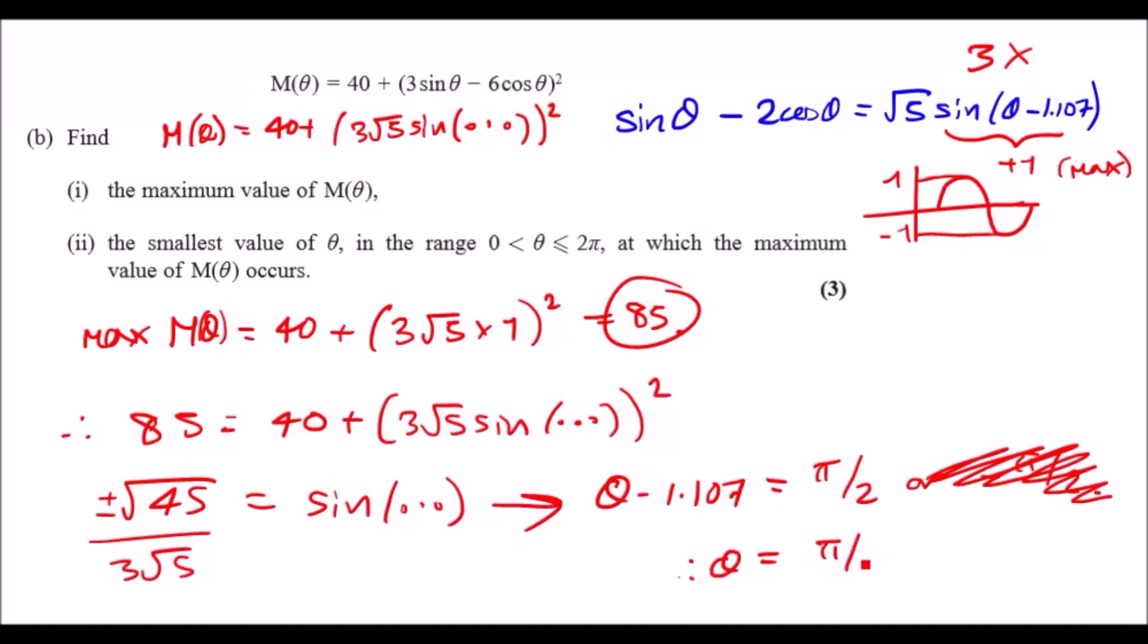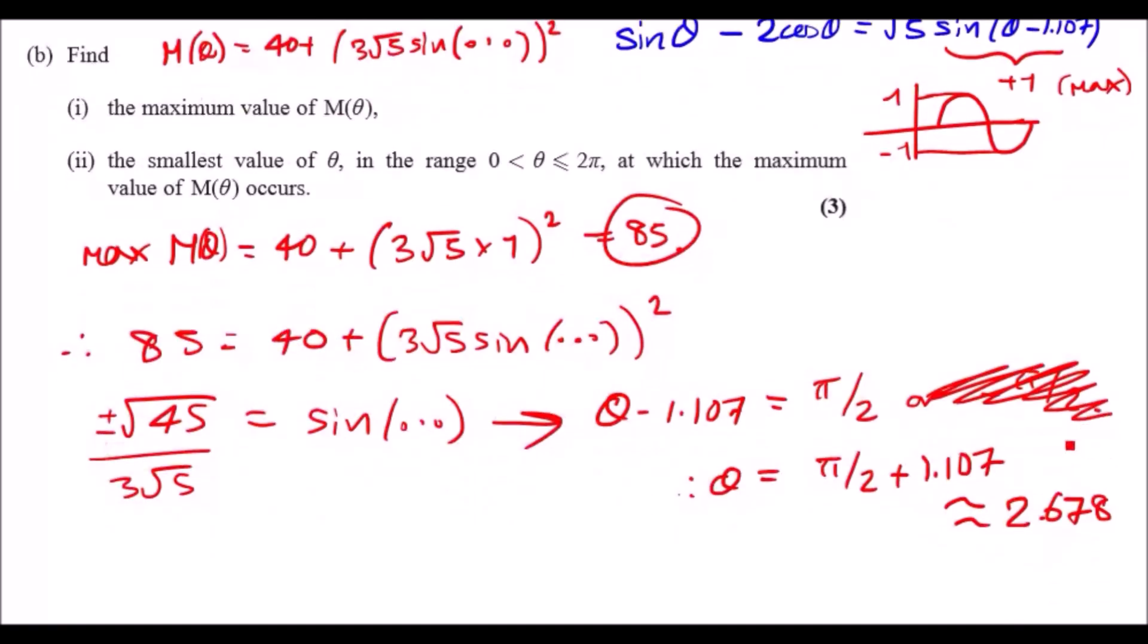So adding this across, θ is going to equal π/2 plus 1.107. What does that actually give you? 1.107... okay, that's about 2.6... so that's the kind of answer we're looking for, 2.678.